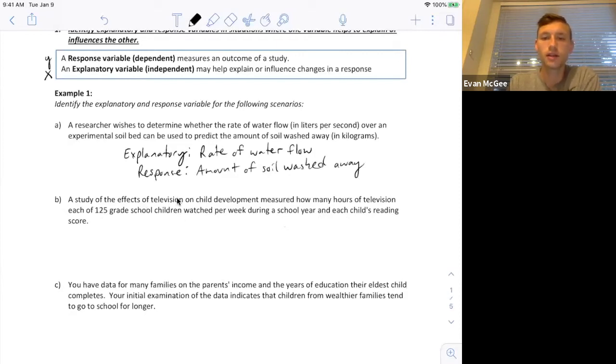So in this case, they're saying that the amount of television watched or hours of television watched will explain how well they do on their reading score. So the reading score is the response. Hours of television is the explanatory.